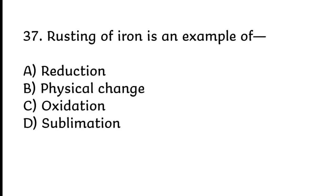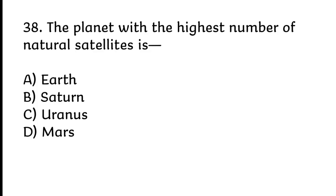Rusting of iron is an example of oxidation. Correct answer is C, oxidation. The planet with the highest number of natural satellites is Saturn. Correct answer is B, Saturn.